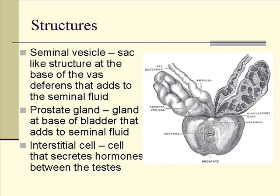The vas deferens connects up to the urethra, but there's a series of accessory glands and structures that help the male reproductive system. One is the seminal vesicle, which sits at the base of the vas deferens and adds to the seminal fluids — when a man ejaculates, it's not just simply sperm, there's more to it. The prostate gland is at the base of the bladder, and the urethra actually runs through the prostate gland. The prostate gland also adds to seminal fluid.